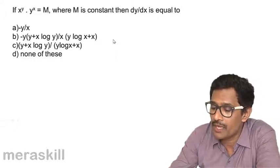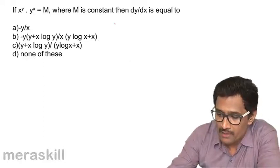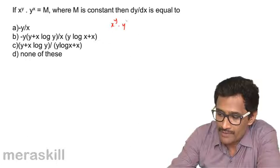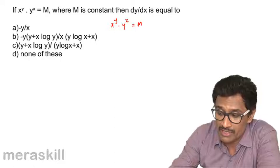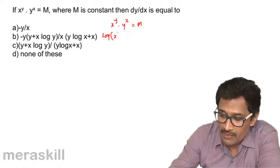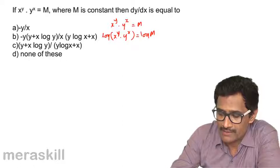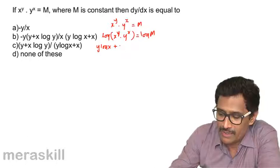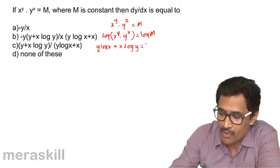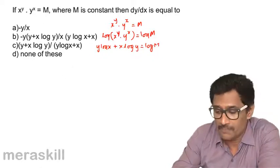Next, we have x^y times y^x equals m, where m is a constant. Taking logarithm on both sides: log(x^y) + log(y^x) equals log m, which gives y log x + x log y equals log m. Since log m is a constant, its derivative is 0.